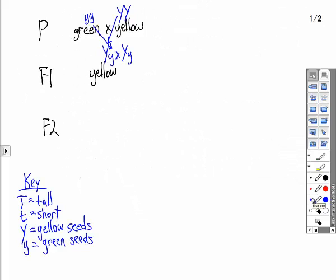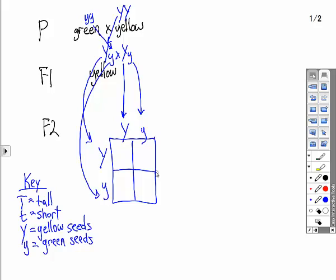We're going to divide this up to half the eggs getting a big Y, the other half of the eggs getting a little y. Half of the sperm getting a big Y, and half of the sperm getting a little y. Here's our Punnett square.